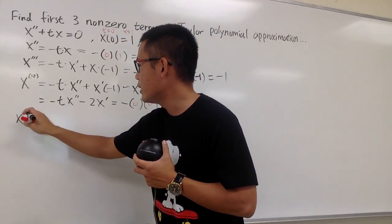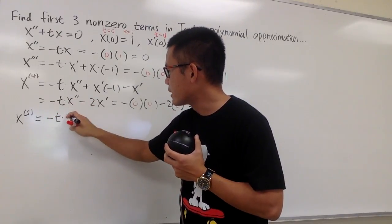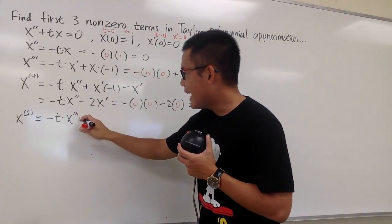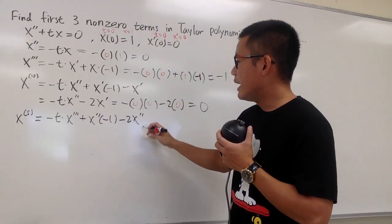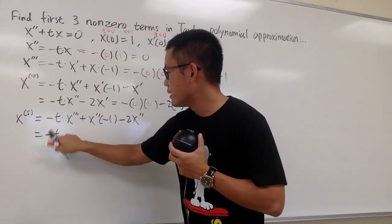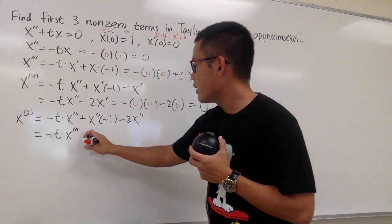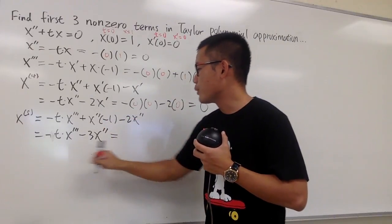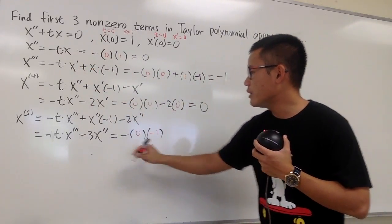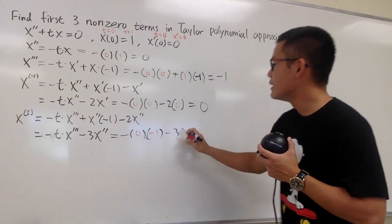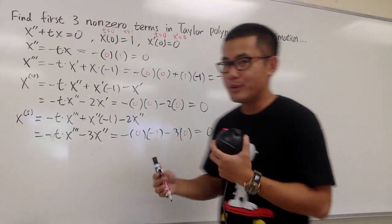Differentiating again for the fifth derivative x^(5). Using the product rule: negative t times x triple prime, plus x'' times negative 1, then differentiate negative 2x'' to get negative 2x''. Combining terms: negative t times x''' minus 3x''. Plugging in values: negative 0 times x'''(negative 1) minus 3 times x''(which is 0). This is still going to be 0, so we have to do the derivative one more time.